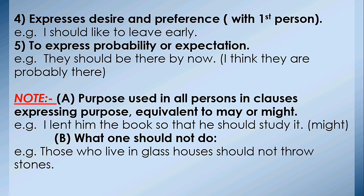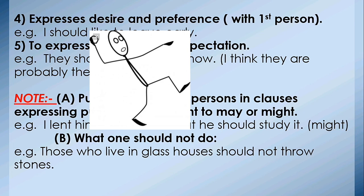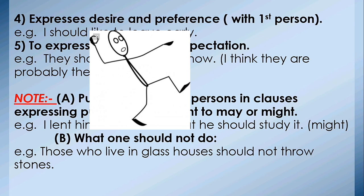Note B: what one should not do — क्या किसी व्यक्ति को नहीं करना चाहिए। For example: 'Those who live in glass houses should not throw stones.' — आपने पुरानी movie 'Waqt' का यह dialogue सुना होगा — जिनके घर शीशे के होते हैं, वो दूसरों पर पत्थर नहीं फेंका करते। Mind it.